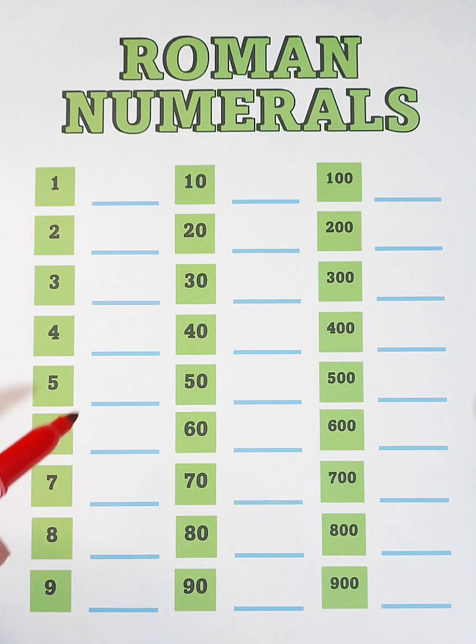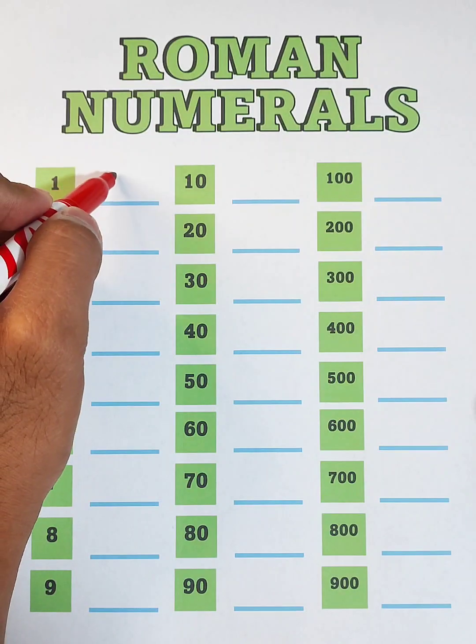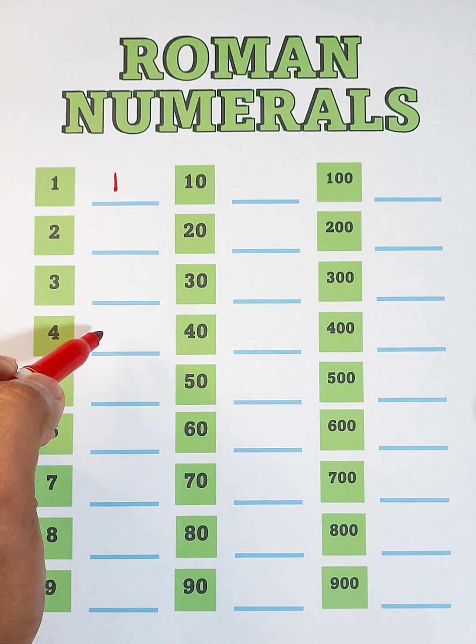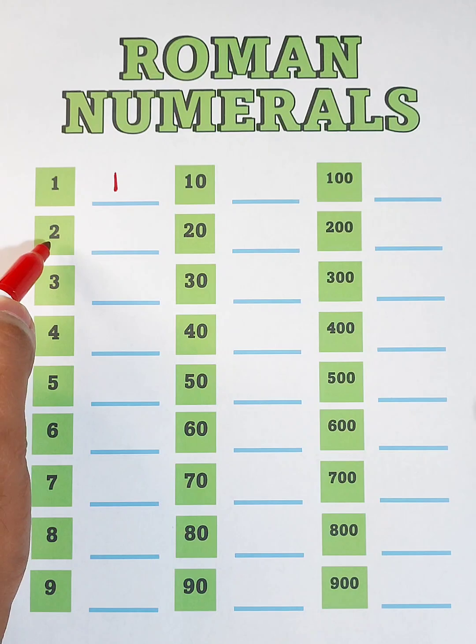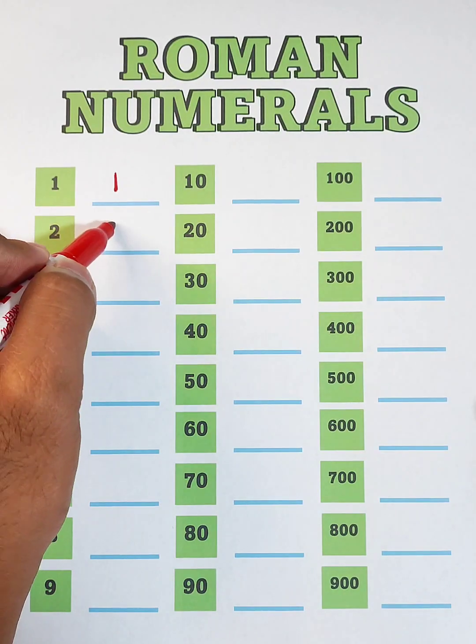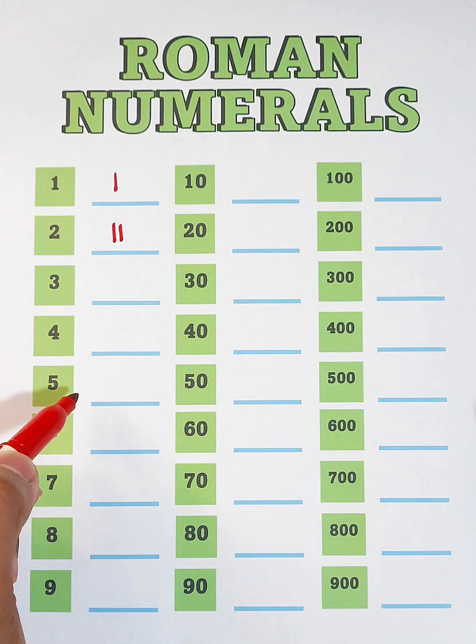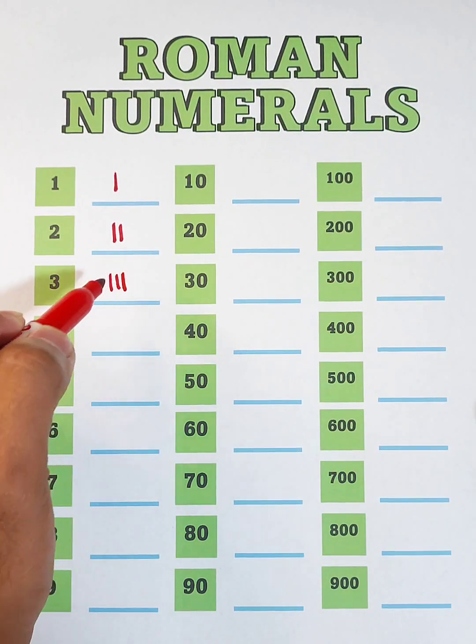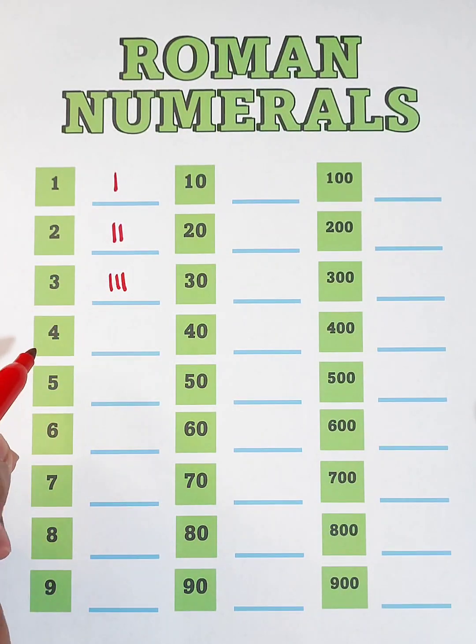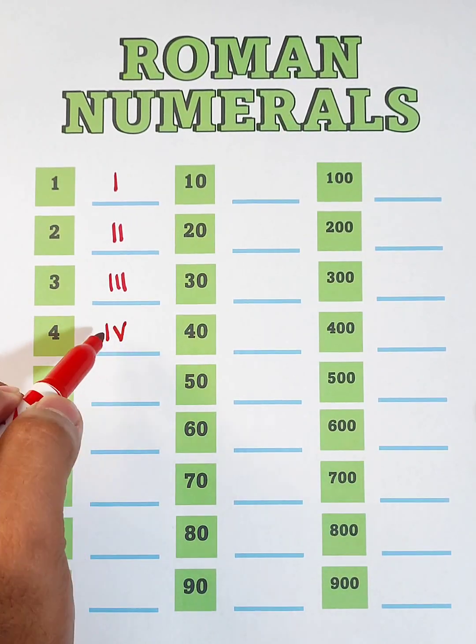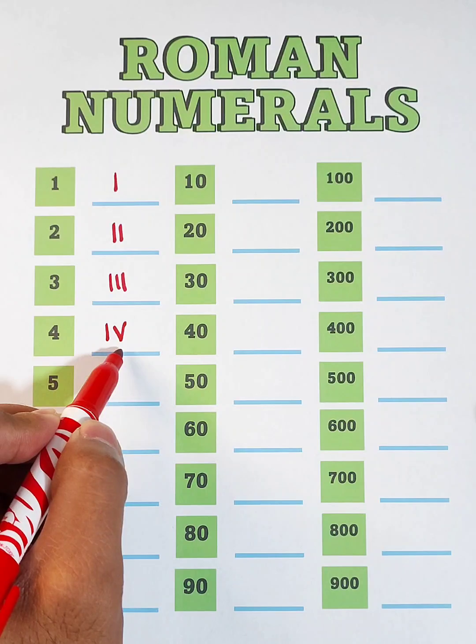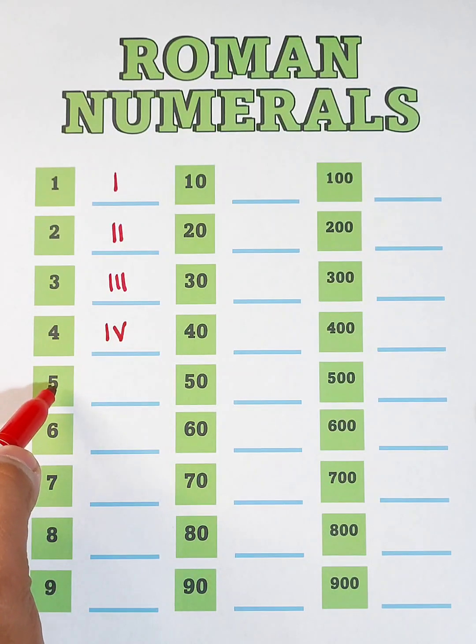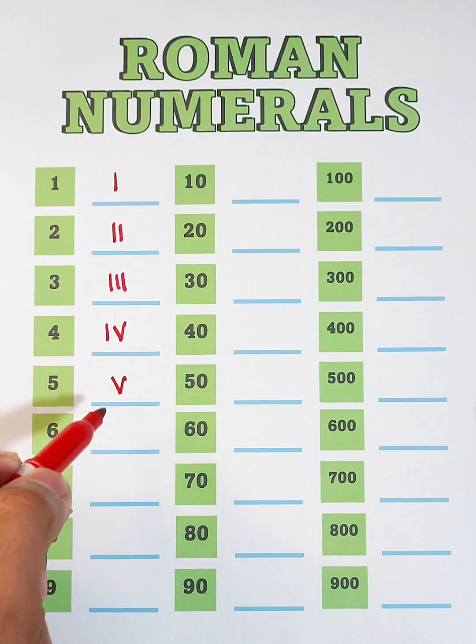From numbers 1 to 9, we will use letter I to represent 1 in Roman numerals. Next, for 2, we will use 2 letter I to represent number 2. For 3, it will be represented by 3 letter I's. And for 4, we will use I and V. This is 1 before 5. And definitely, this 5 will be represented by letter V.